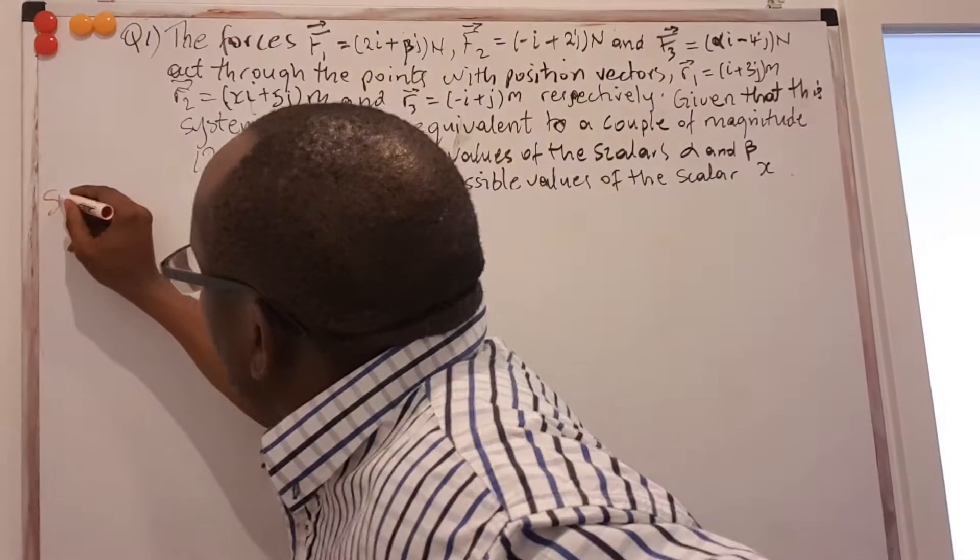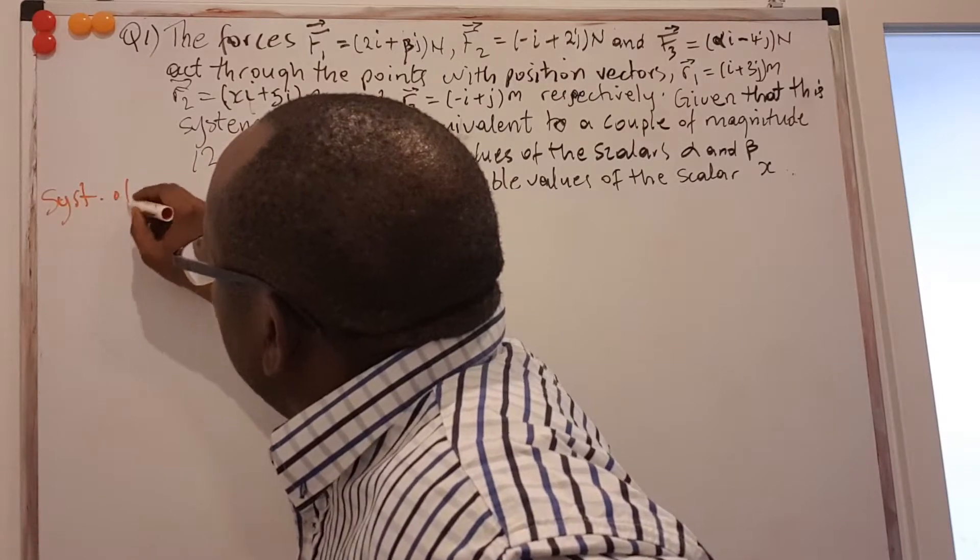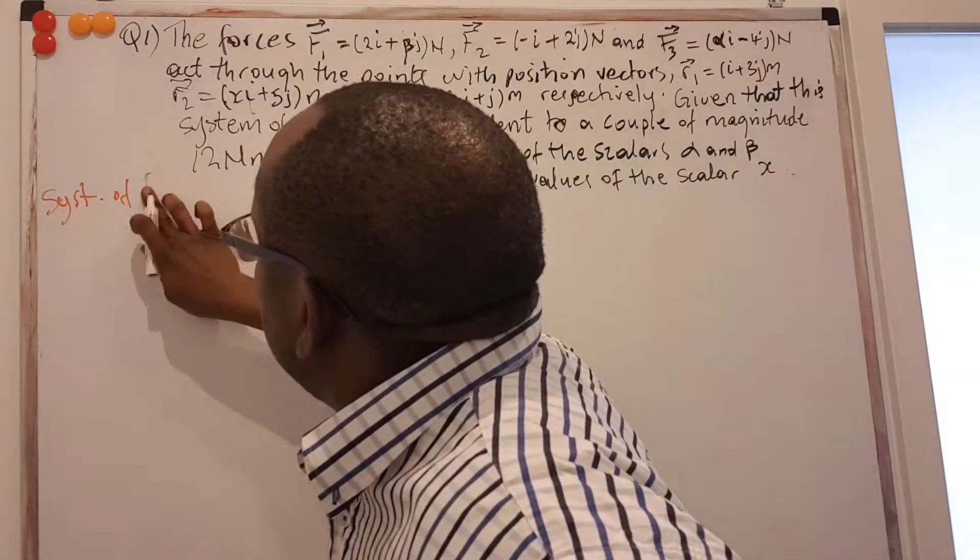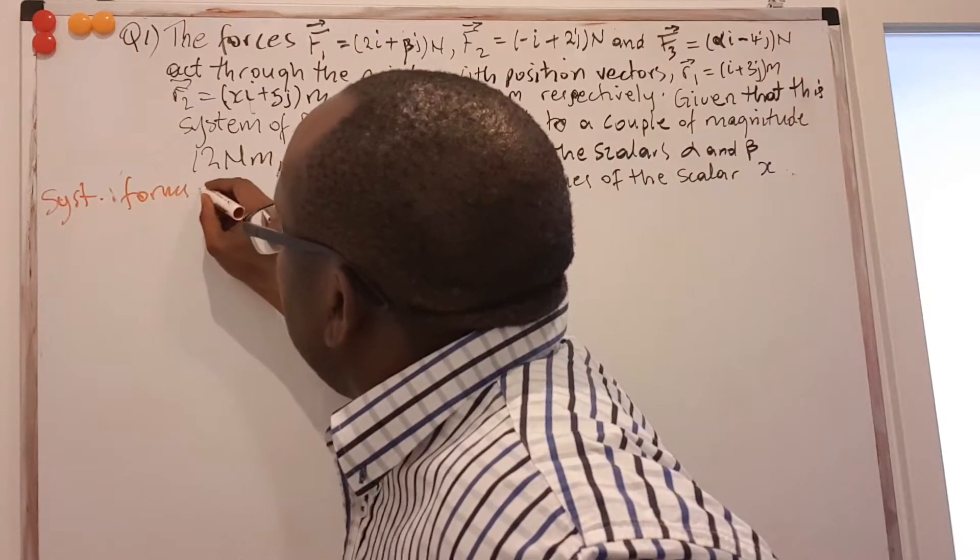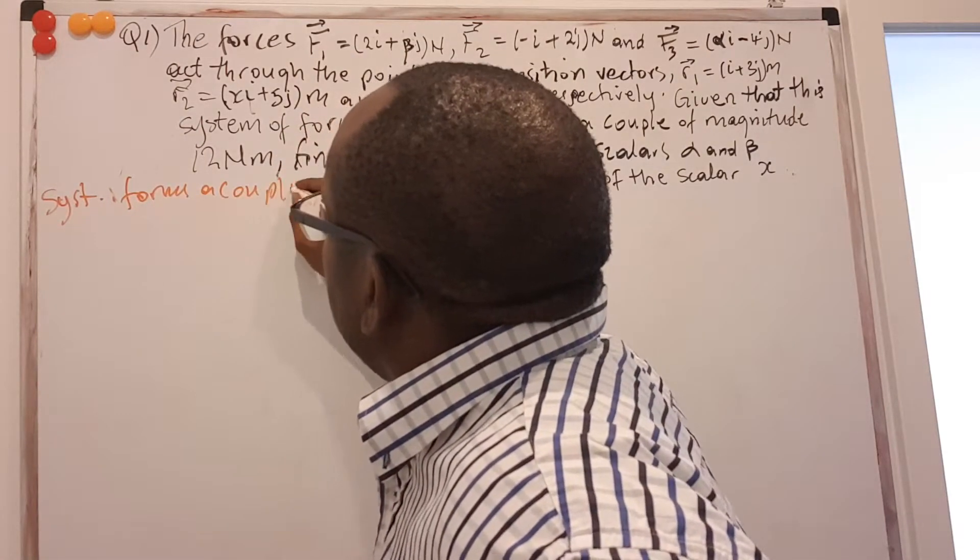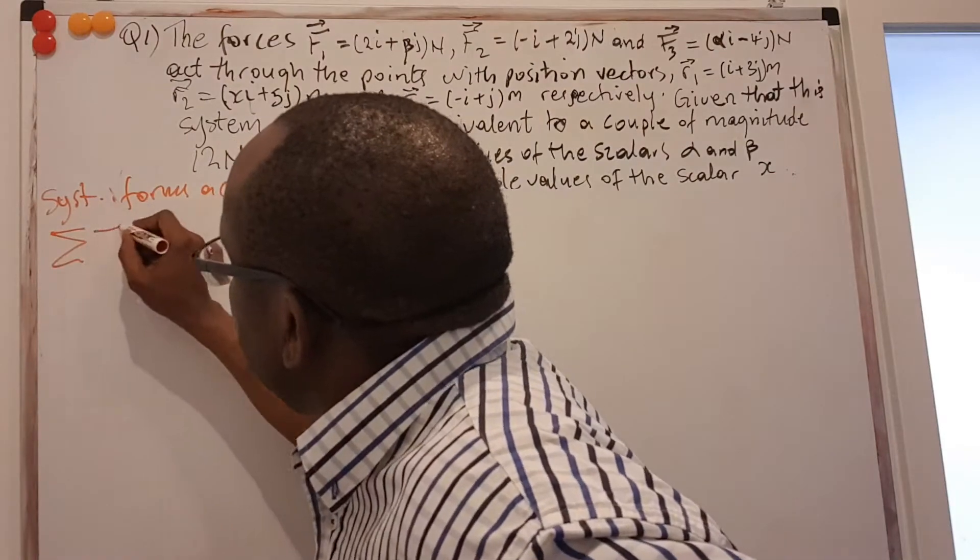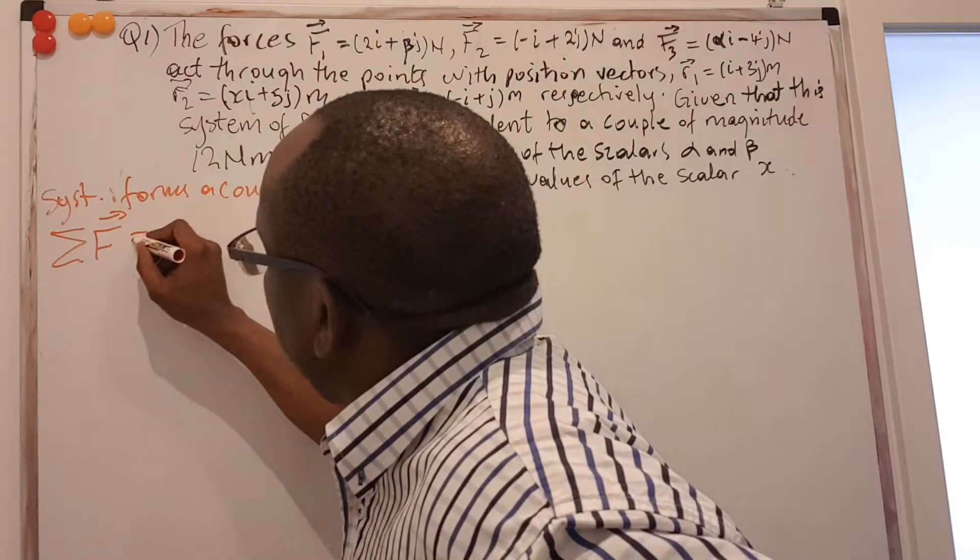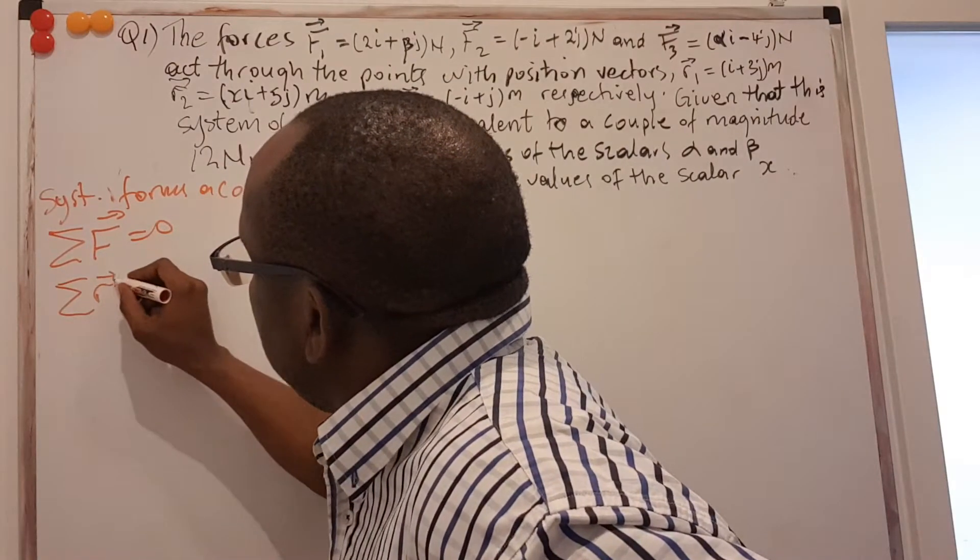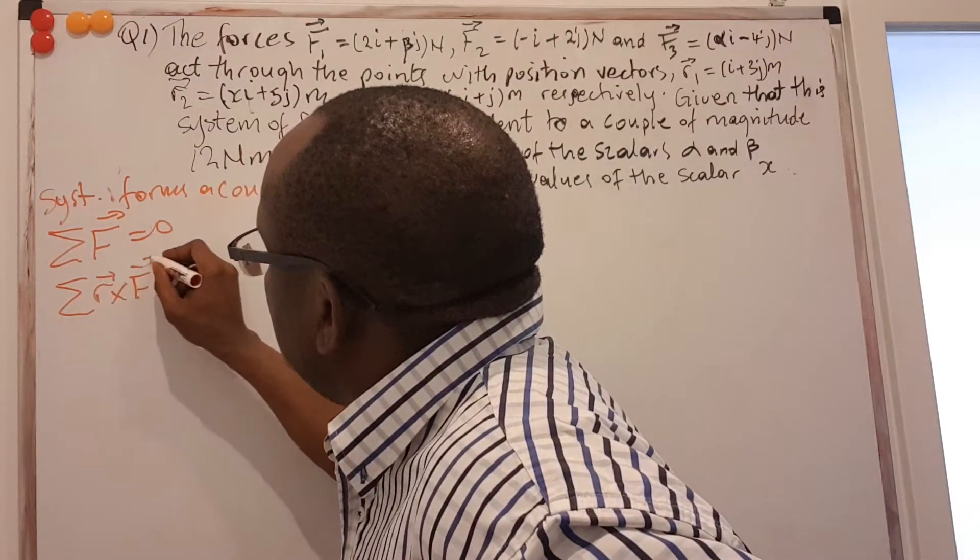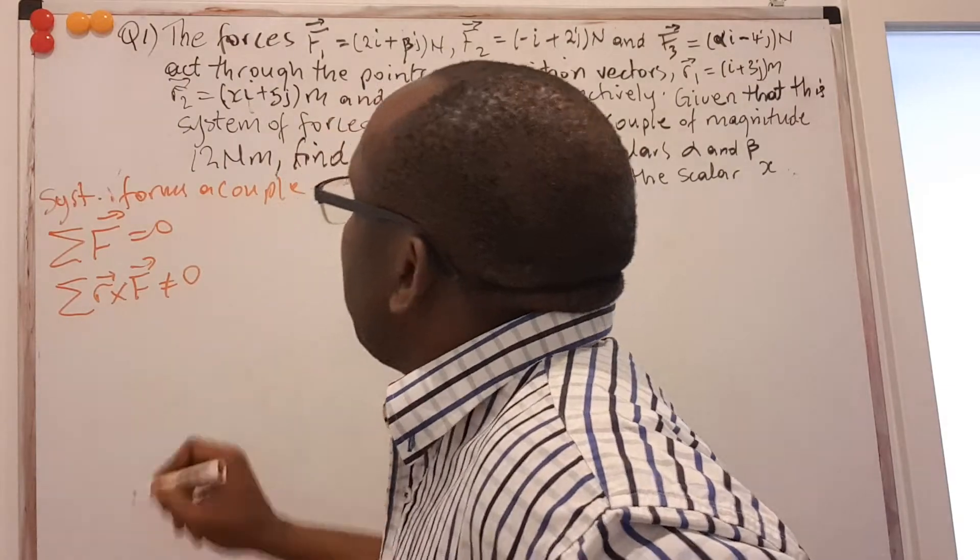So here, we are given that the system of forces forms a couple. If that is true, then that implies that the sum of those forces should be equal to zero. But the sum of their moments should not be equal to zero.